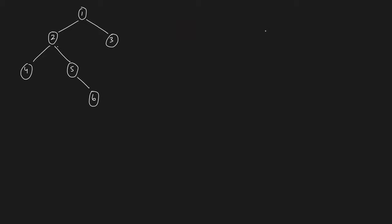So what is the inorder traversal? When I say inorder it means left first, then the root, then the right. The left is four — you go left, left, left, so left is four, then root is two, then you go to five, then six, then you come back to one, and then you take three. That's the inorder traversal for this binary tree.